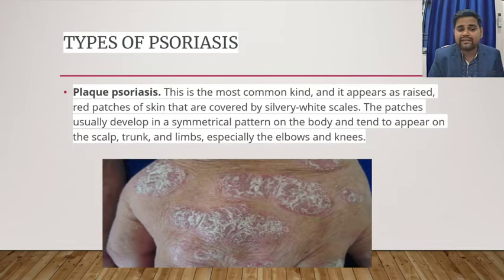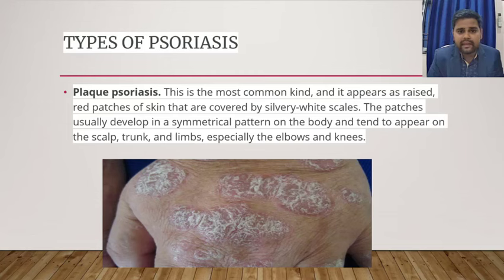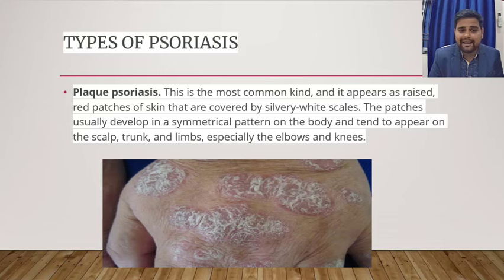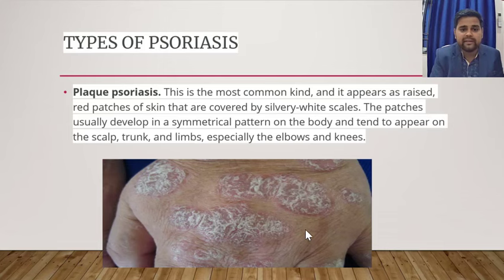Plaque psoriasis is one of the most common types of psoriasis, in which red patches of the skin covered by silvery white scales become elevated. They are usually symmetrical in pattern on the body and tend to appear on the scalp, trunks, and limbs — especially the elbows and knees. As you can see in this picture, this type is the most common.